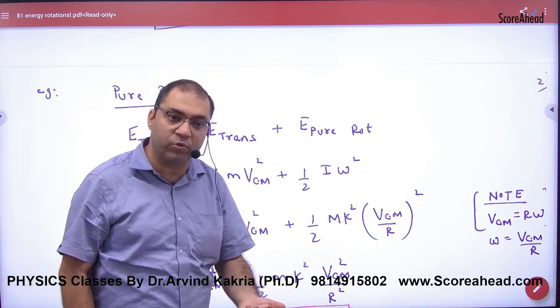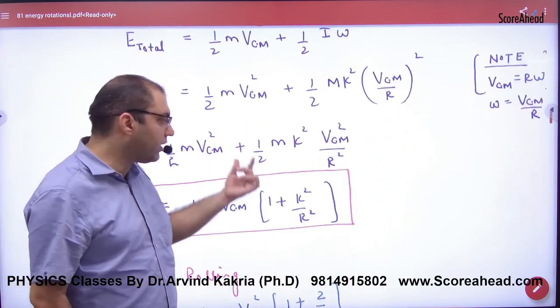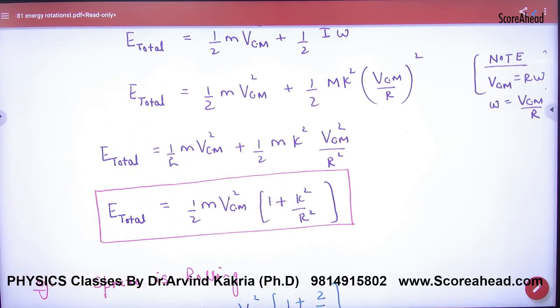For sphere, 2/5 mr². For disk, half mr². Using that approach will be a little longer. This formula will be shorter. Clear here? Okay? Thank you.